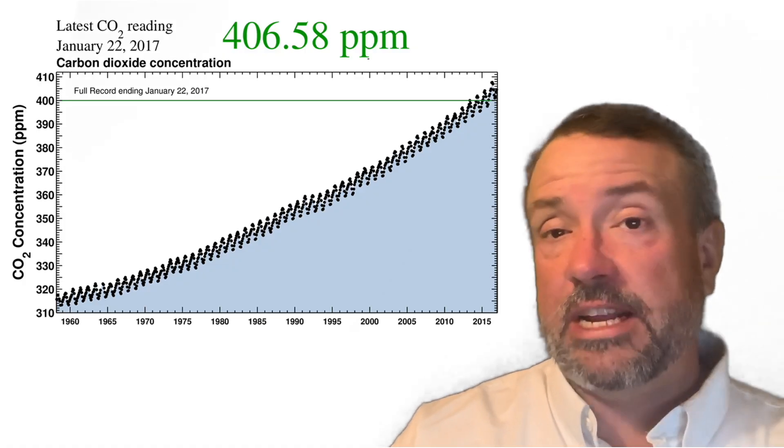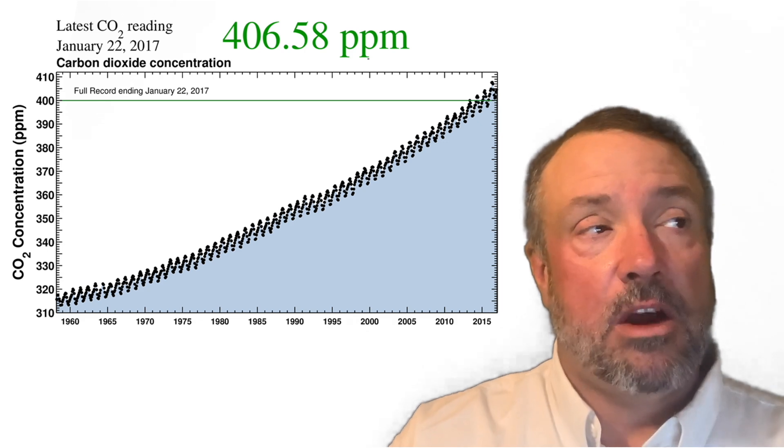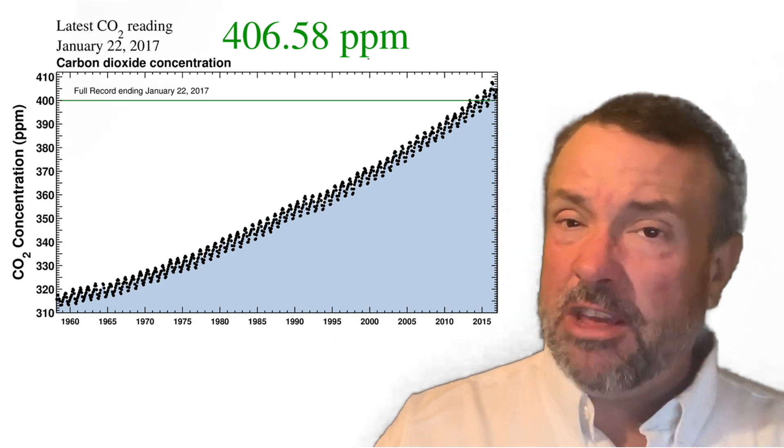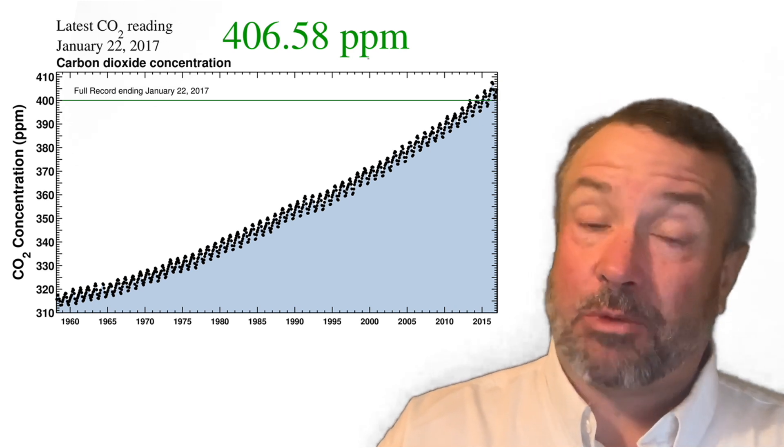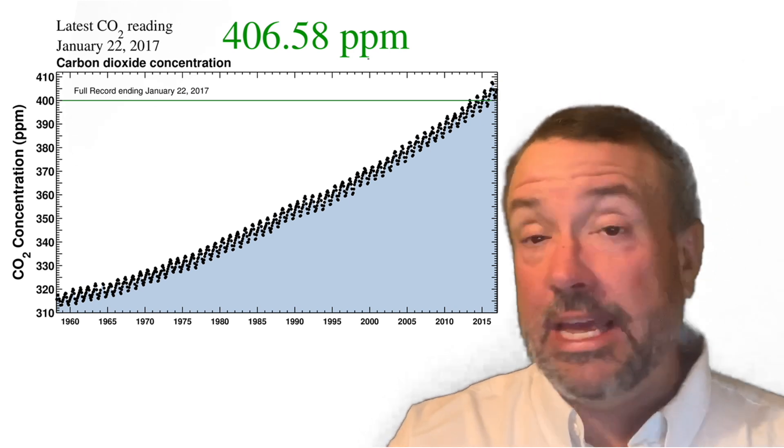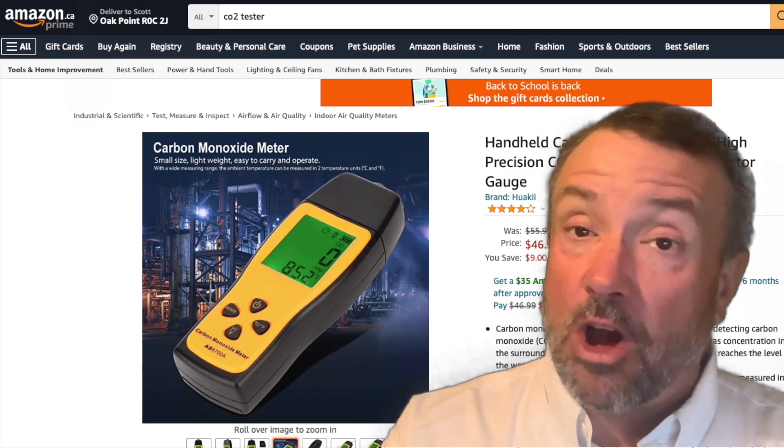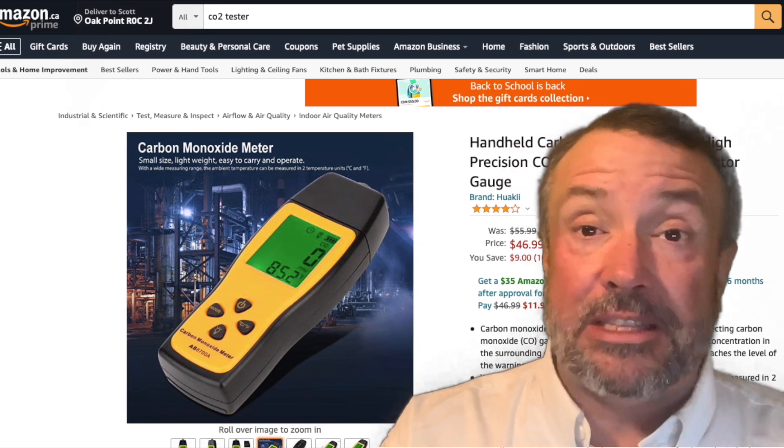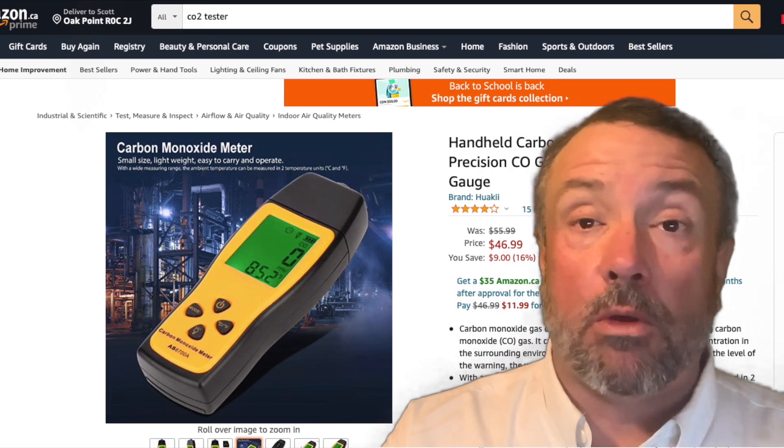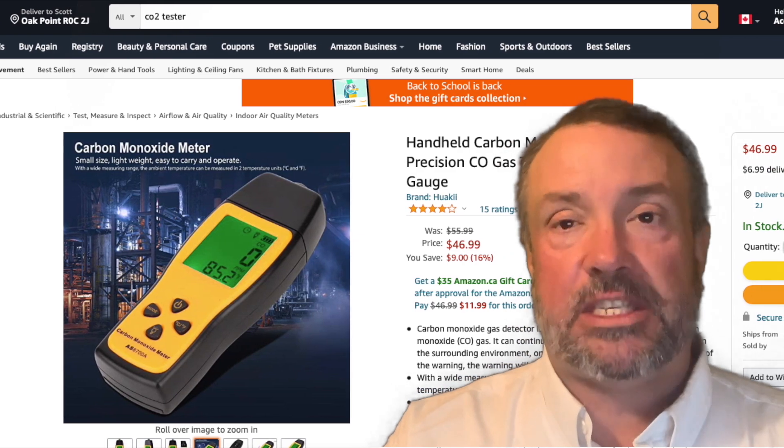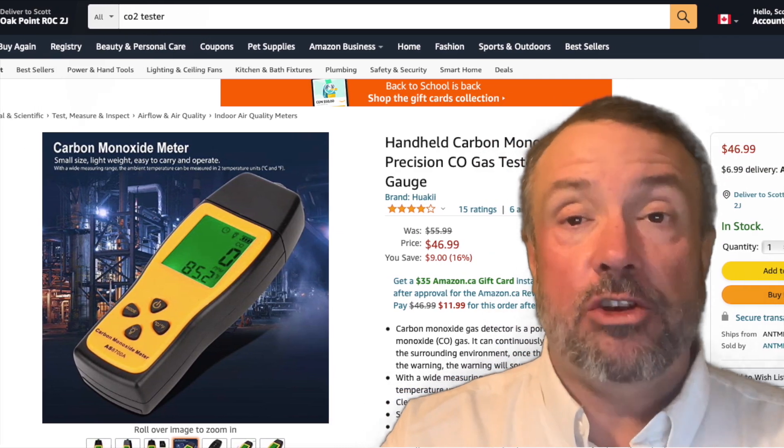When I say you're going to need a thousand parts per million, or 1200, depending on your temperature and where you're located, how do you find that out? Well, guess what? You can actually go to eBay or Amazon or Alibaba and you can get a test meter. And believe it or not, these test meters are not that expensive. They're actually relatively affordable. And you can monitor and even track what the CO2 levels are in your greenhouse.